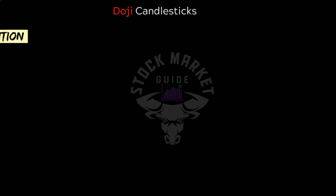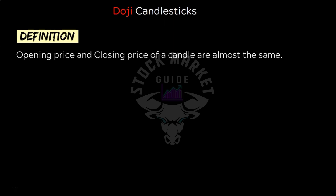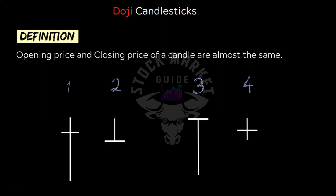So let's start with doji candlesticks. I have already introduced doji candlesticks in one of the previous lectures. A doji is created when the opening price and the closing price of a candle are almost the same. Due to this a doji does not have a real body and simply looks like a straight line. The upper and lower wicks can be long or short, but as a trader we normally ignore dojis with small wicks, so pay attention only to those dojis with long wicks.